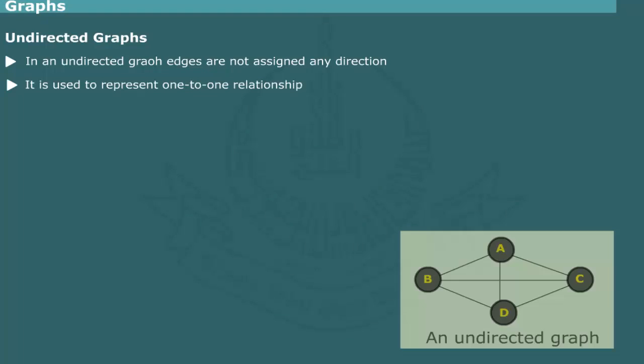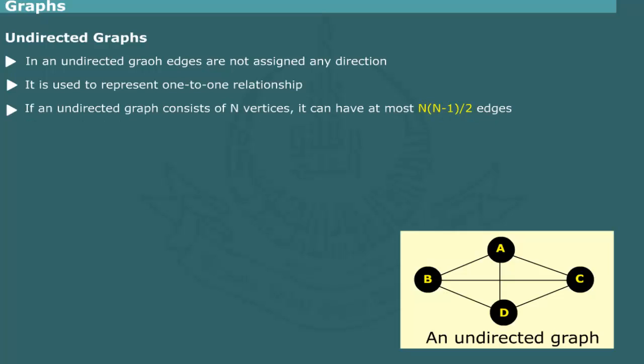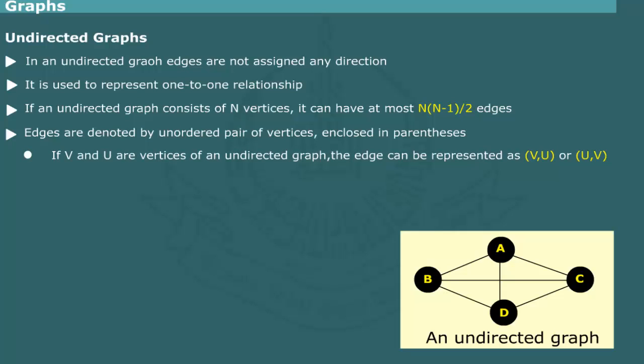Undirected Graph: In an undirected graph, the edges are not assigned any direction. Thus, they can be at most one edge between a pair of vertices. The undirected graph is used to represent one-to-one relationships among the data elements. Figure shows an example in which all elements are linked together. It can be shown that an undirected graph with n vertices can have at most n(n-1)/2 edges. The edges of an undirected graph are denoted by unordered pairs of vertices enclosed in parentheses. For example, an edge connecting vertices v and u is represented as (u,v). Note that (u,v) and (v,u) represent the same edge. An undirected graph is also termed as undigraph.